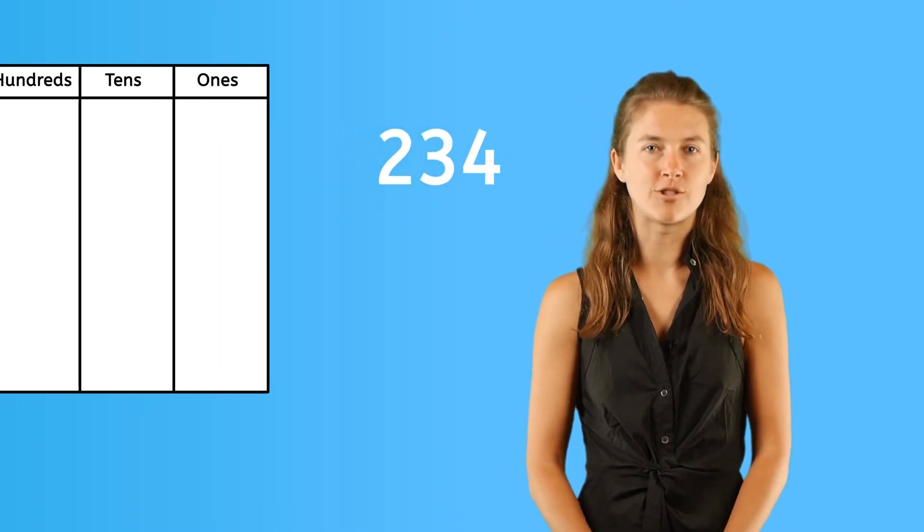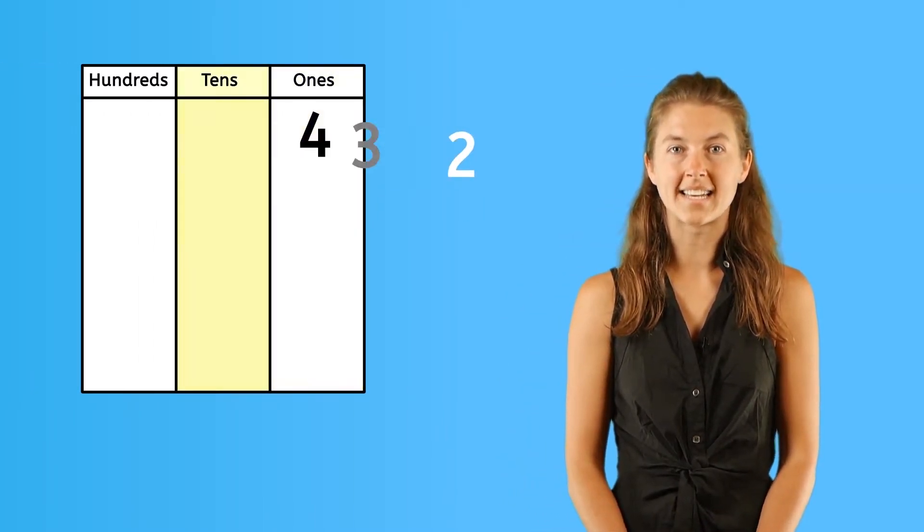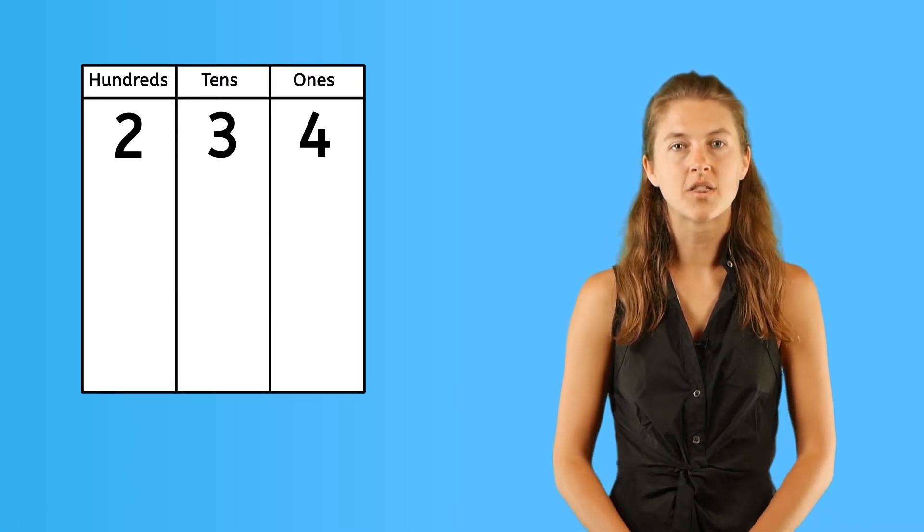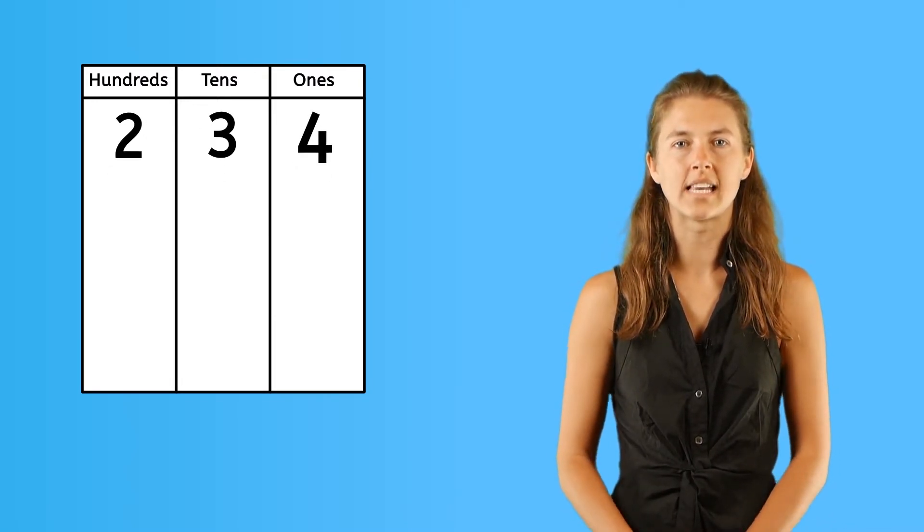So, you remember that a place value chart shows the ones, tens, and hundreds. The number 234 has two hundreds, three tens, and four ones in it.